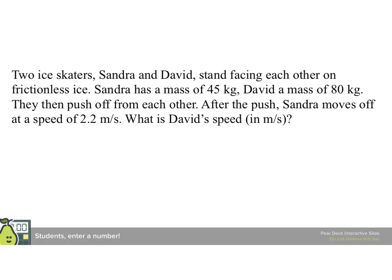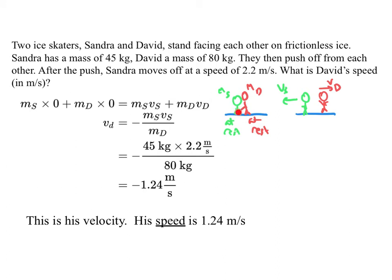Two ice skaters, Sandra and David, stand facing each other on frictionless ice. Sandra has a mass of 45 kilograms. David has a mass of 80 kilograms. They then push off from each other. After the push, Sandra moves off at a speed of 2.2 meters per second. What is David's speed? So, as usual, we draw a picture. Here they are before. Here they are after. And again, we have that the initial momentum equals the final momentum, because all the forces are internal. There are no external forces. It's Sandra and David pushing on each other. So, the original momentum at the start is actually zero, because nobody's moving. And the momentum at the end are these two. So, we solve over. I have been uncareful with my sense of sign, so apparently I have chosen V Sandra to be the positive. So, that's the plus direction. So, that David gets a speed, a velocity of minus 1.24 meters per second. Of course, his speed is just the absolute value of that.